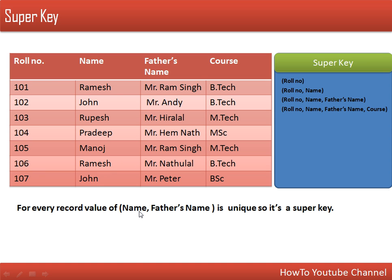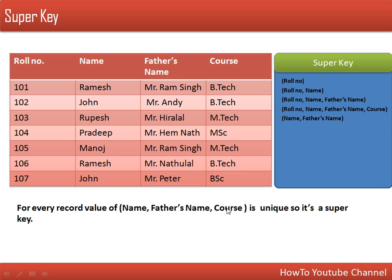Now we will consider the combination of name and father's name. We are not having any two records which have the same value for both name and father's name together. We do have two records with the same name, but their father's names are different. So these two attributes together are different in every record, and this combination will be considered as a super key. Similarly, the combination of name, father's name, and code is also unique in every record — it might be possible that name or father's name is the same for two records, but not all three attributes together. So this is also considered a super key.